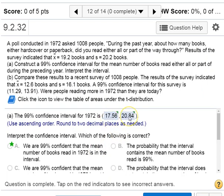The correct way to interpret a confidence interval is that we are 99% confident that the population mean falls within that interval.